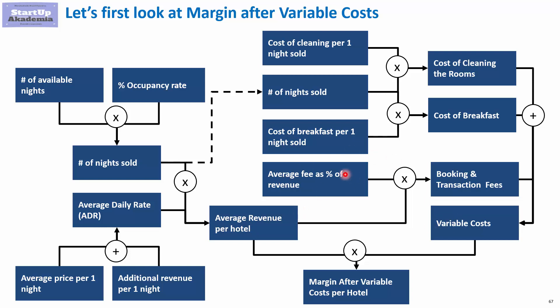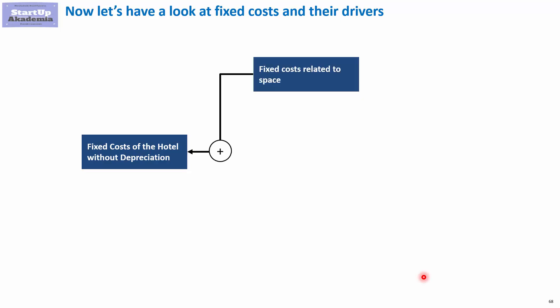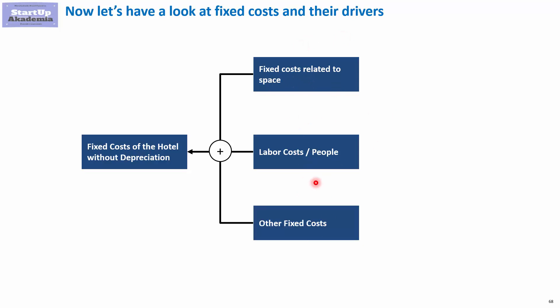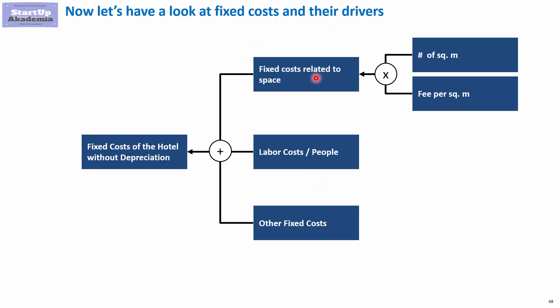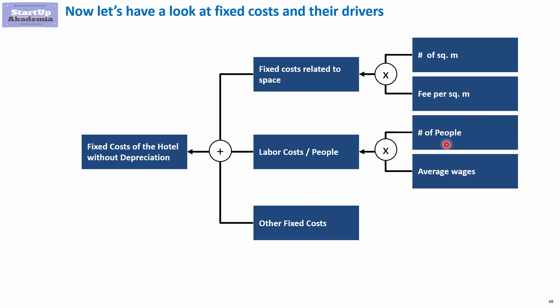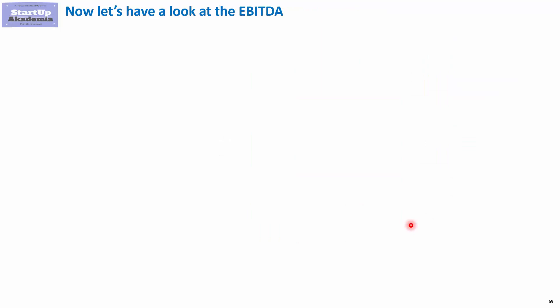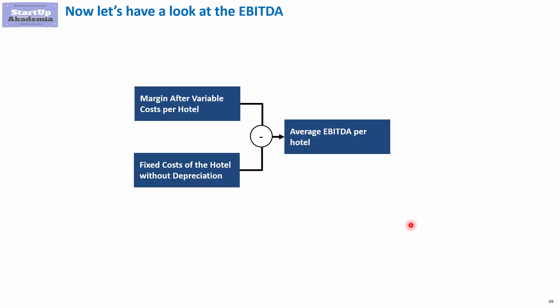Booking transaction fees will simply depend on revenue as a percentage of revenues. When it comes to reaching EBITDA, we have to account for fixed costs. Fixed costs of the hotel — without depreciation — depend on: fixed costs related to space, labor costs, and other fixed costs. Space costs are modeled by the area occupied multiplied by a cost per square meter. People costs depend on number of people and average wage, and other costs can be modeled in relation to space or assumed as a fixed amount.